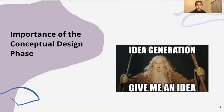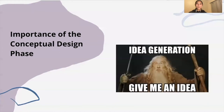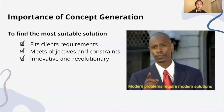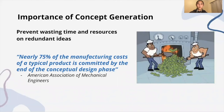The second step of the engineering design process is the conceptual design phase. Concept generation is a process where we create solutions to our problem definition. It involves all individuals inputting their ideas, which the team then builds on and modifies to form a diverse range of possible solutions. Concept generation is necessary to find the best possible solution that successfully fits the client's requirements, is feasible, and meets objectives and constraints. By generating a variety of solutions, we are able to think outside of the box and produce something potentially innovative and revolutionary. According to the American Association of Mechanical Engineers, nearly 75% of the manufacturing cost of a typical product is committed by the end of the conceptual design phase, highlighting the need to consider many factors when generating concepts.